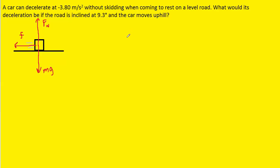We can then turn to Newton's second law, which says that the net force acting on the car is equal to its mass times its acceleration. We have three forces acting on the car, but the normal force and the gravitational force cancel each other out, because the car is not accelerating vertically. So these two forces cancel, and the only force that's left is this frictional force.